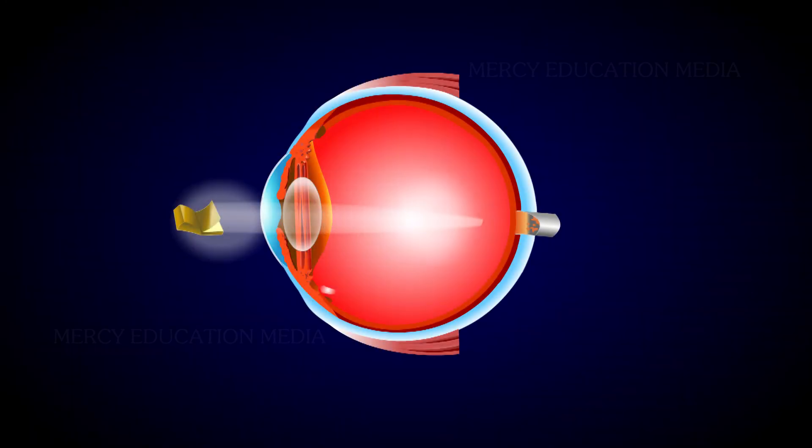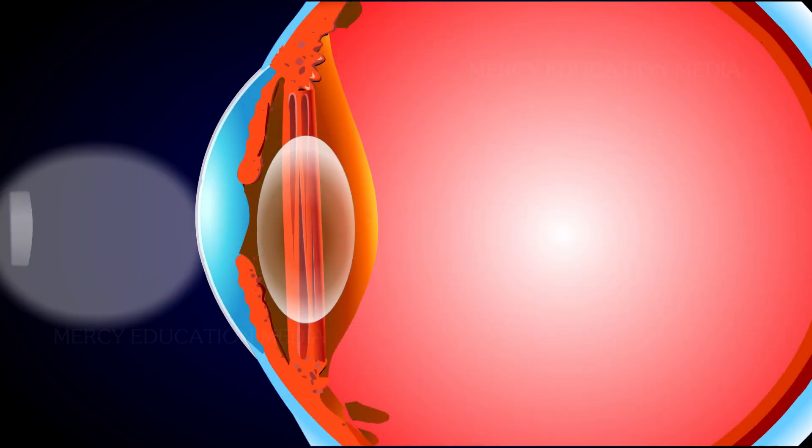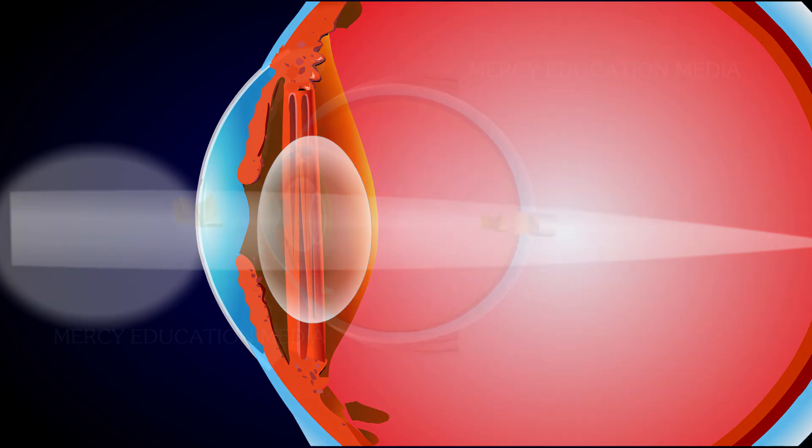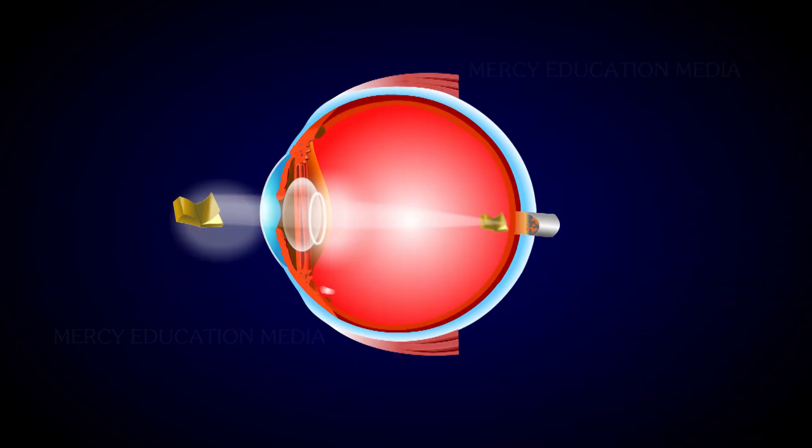Explain presbyopia. Presbyopia develops when our eye's natural lens loses its flexibility. Focusing on close objects becomes more difficult. The ciliary muscle contracts which causes a flexible lens to change shape. This change in shape allows us to see objects up close.